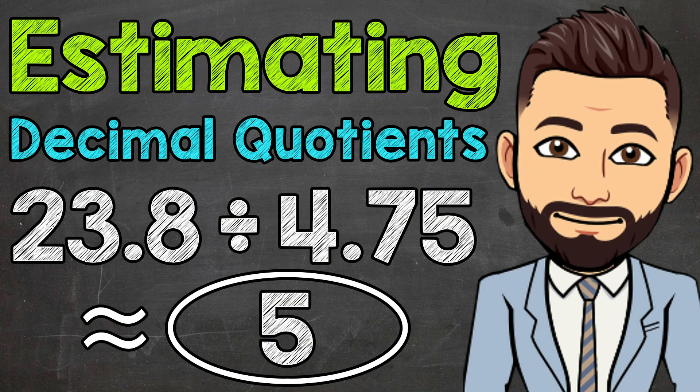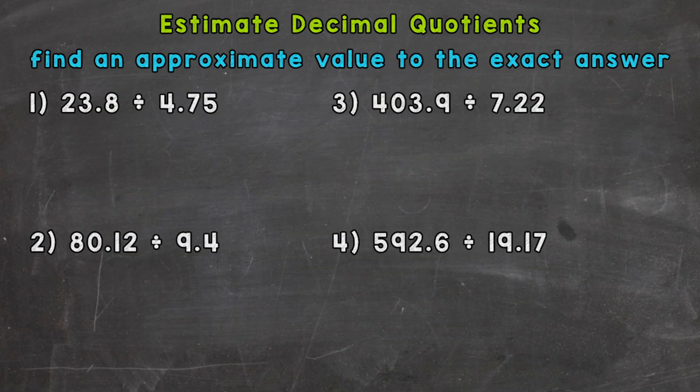Welcome to Math with Mr. J. In this video I'm going to cover how to estimate decimal quotients. When we estimate, we find an approximate value to the exact answer. There are a lot of different strategies we can use. The ultimate goal when it comes to estimation is to round and manipulate the problem in order to find an approximate answer in your head or with minimal work. There are no specific written rules for estimation, but I'll show you a couple of my favorite strategies for decimal division estimation.